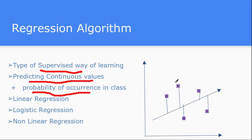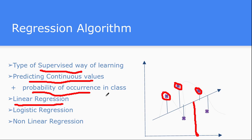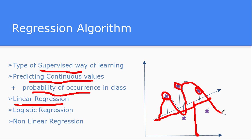Let's take one example: house price prediction. You are given a dataset based on some features of a house, and your job is to predict the value for a new house. That is the regression kind of algorithm — linear regression. This linear regression can also be nonlinear. You can model the data in a straight line format or in a curve format; it's up to you how you want to model it.